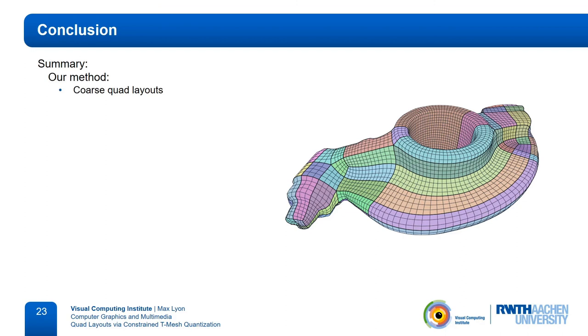Okay, to summarize, we presented an algorithm which generates coarse quad layouts. It guarantees to always find a valid solution and the layout will be free of t-junctions. Further, it can also guarantee that the layout separatrices stay within a user-specified angular bound around the original directions in the seamless parameterization. And lastly, all this is done quite fast.